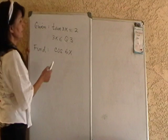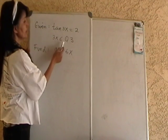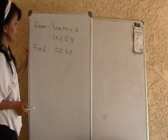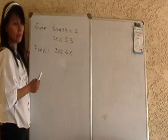And I say that this angle 3x terminates in quadrant 3. So I think I have enough information to find the cosine of 6x.